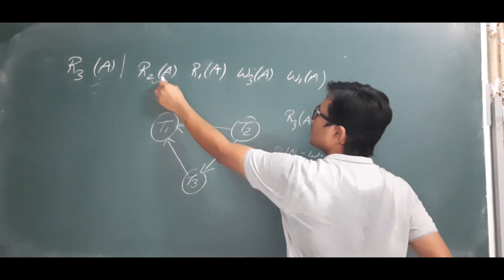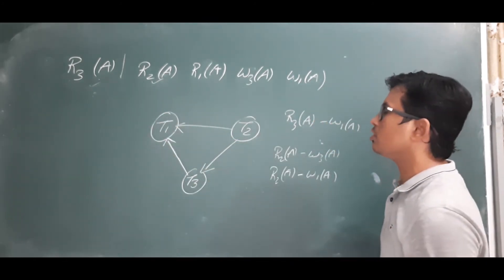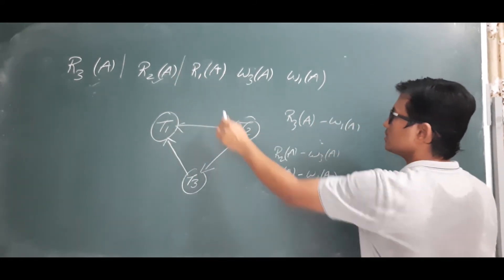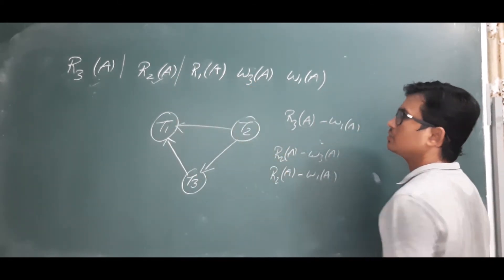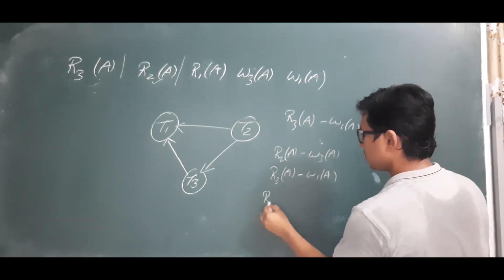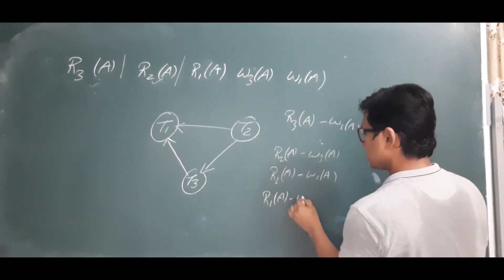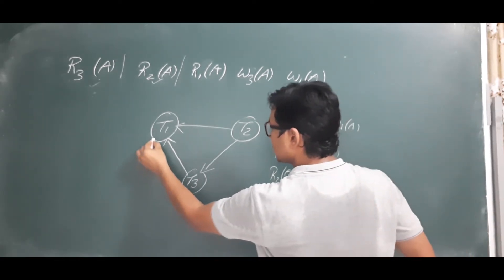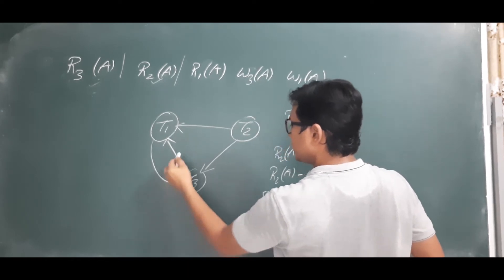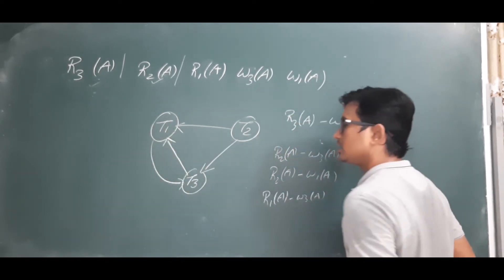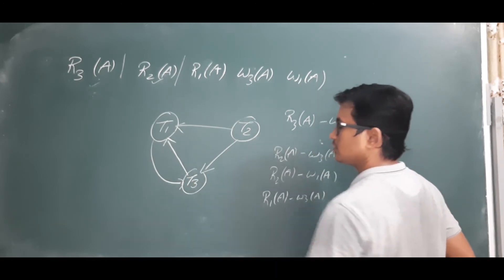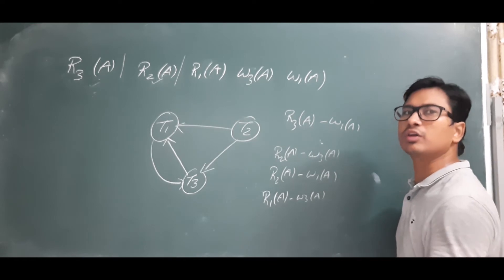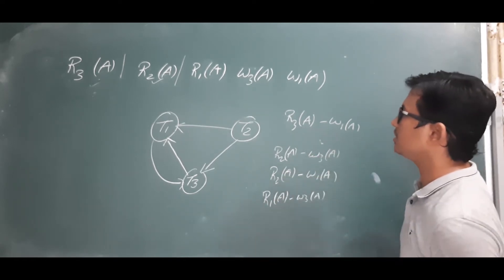We are done with R2(a). Now we check R1(a): R1(a) and W3(a) is a conflicting operation, so there should be an edge from T1 to T3. But previously there was already an edge from T3 to T1, and now we have an edge from T1 to T3 — so there is a cycle. We can say it is not conflict serializable, but let me finish checking all operations.